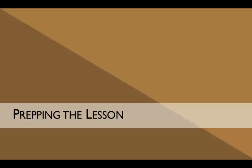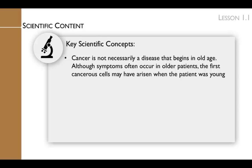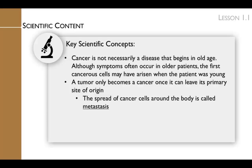To prepare for this lesson, review the following key scientific concepts. First, cancer is not necessarily a disease that begins in old age. Although symptoms often occur in older patients, the first cancerous cells may have arisen when the patient was young. Second, a tumor only becomes a cancer once it can spread from its primary site of origin. We use the term metastasis to describe the spread of cancerous cells around the body. Also review the difference between benign and malignant tumors: a benign tumor does not spread from its site of origin, whereas a malignant tumor does.